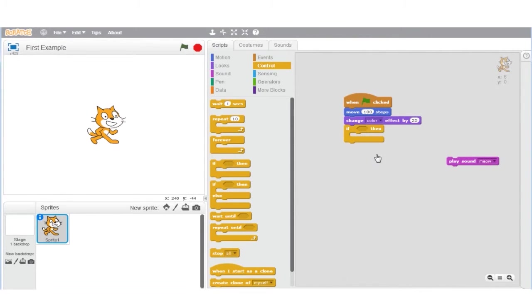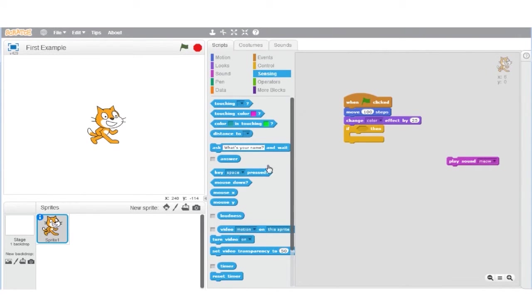The condition for the cat to meow is that it is touching the edge. I'll introduce the touching block from the sensing palette and put it inside the if part of my orange block, setting it to touching edge.